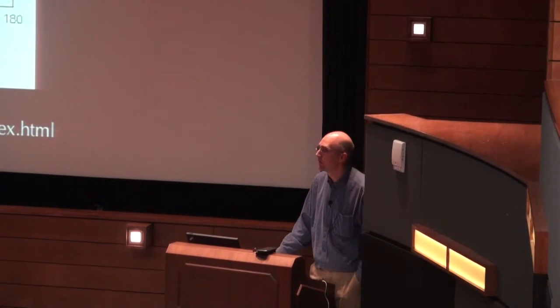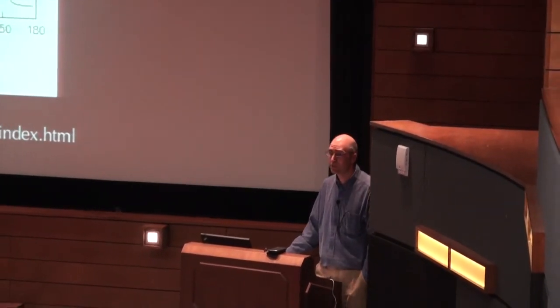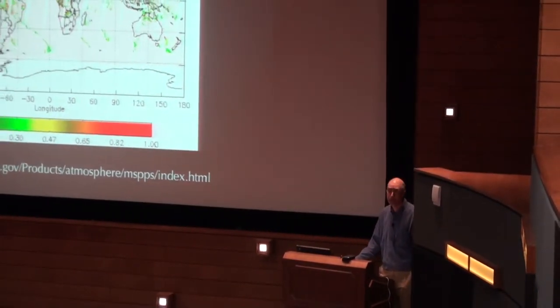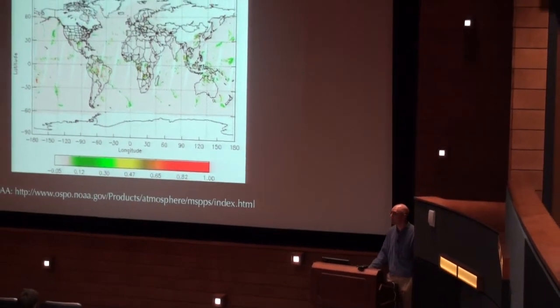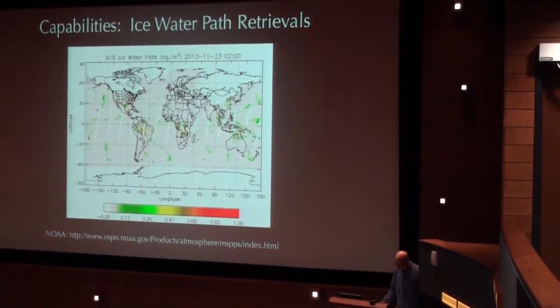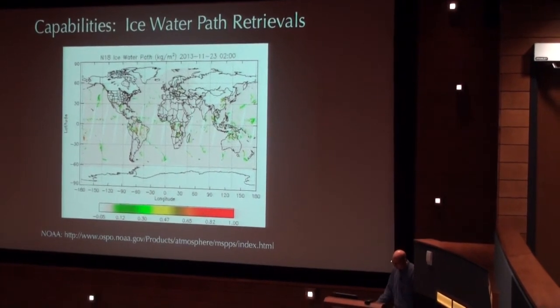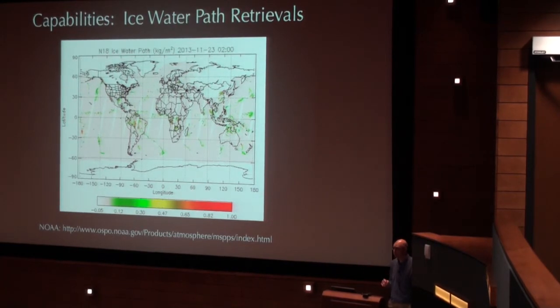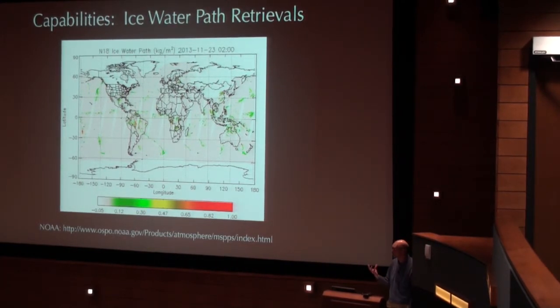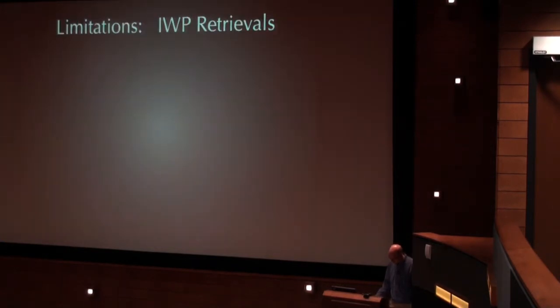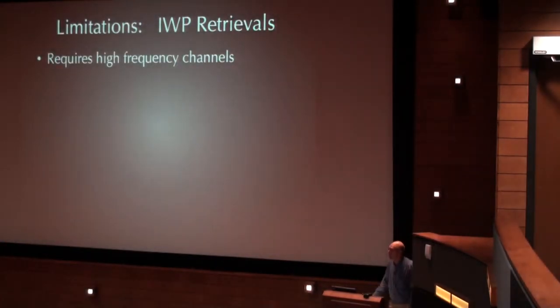Other capabilities. Andy actually mentioned this earlier. We can do ice water path retrievals using microwave. And these are usually using the highest frequency channels, mostly on the sounders, 150 gigahertz or so, subtracting 89 gigahertz or so. These are fairly simplistic at this stage. They're looking at brightness temperature differences between those two frequencies as a proxy for how much ice water content you have in the atmosphere.